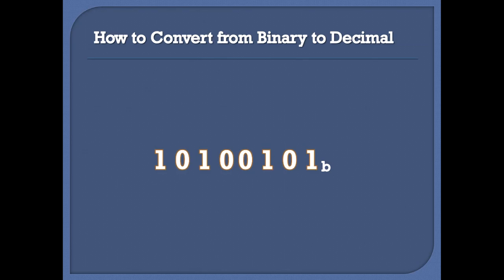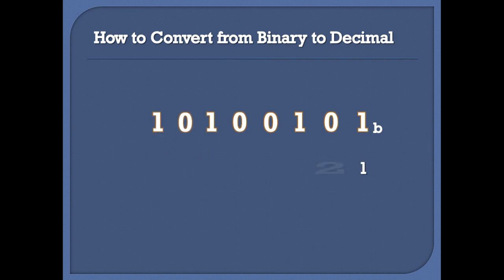Let's say that we have this 8-bit binary number and we want to convert it to decimal. Now you need to write the following sequence under your binary number digits. And I will tell you after we finish this example from where we can get this sequence.